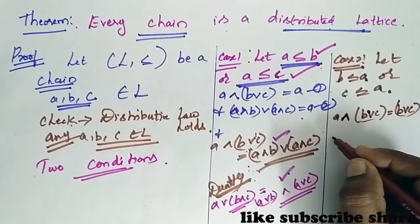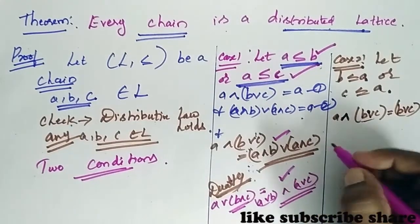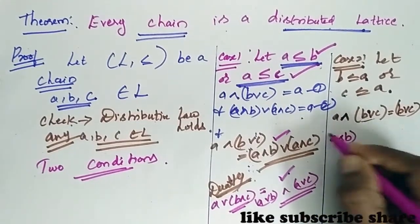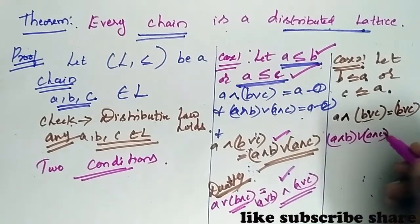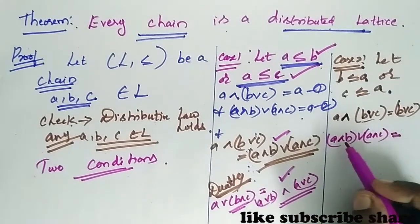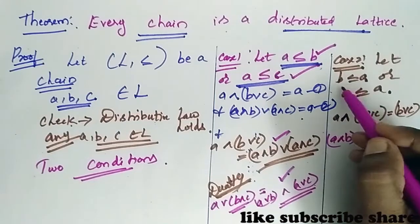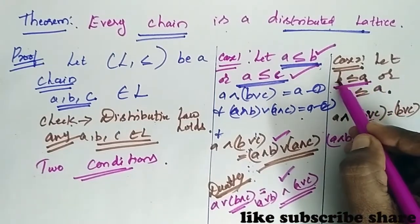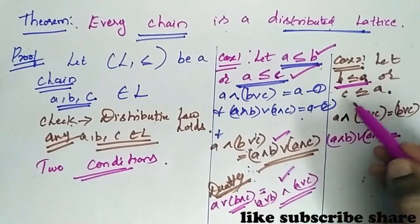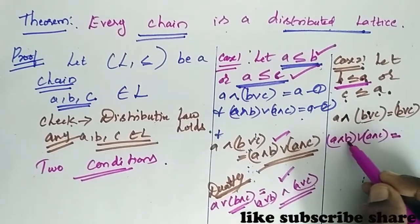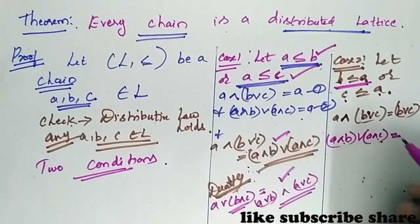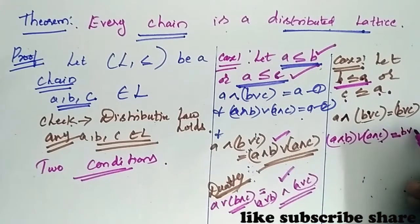When we go for the next, since b is lesser and a is greater, c is lesser and a is greater, when you go for meet you will be getting b and c only. So this is 1 and this is 2.